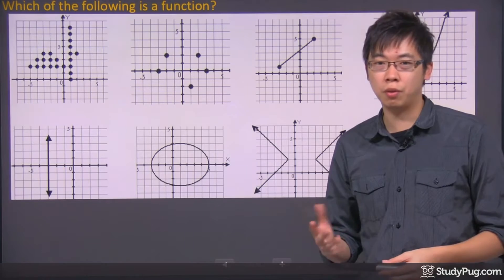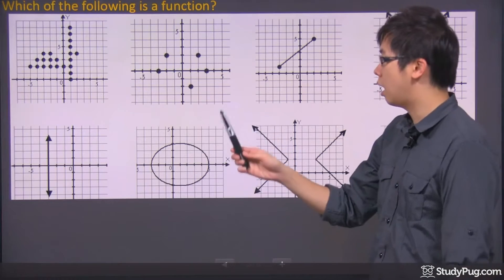The vertical line test is pretty straightforward. You just hold your pencil up straight, right? And let's do it from the first graph.